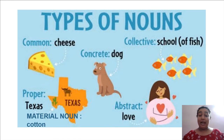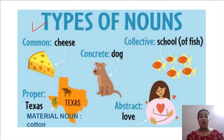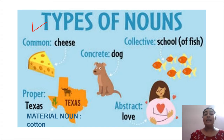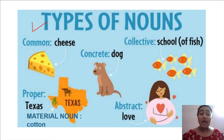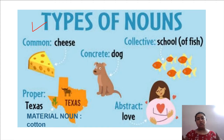I have spaced it over here. We can see a piece of cheese, we can see a dog, we can see a school of fish, abstract love — the feeling of love she's experiencing — and then we can see Texas, which is a city in the USA.